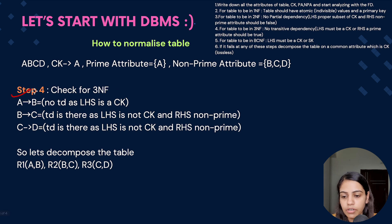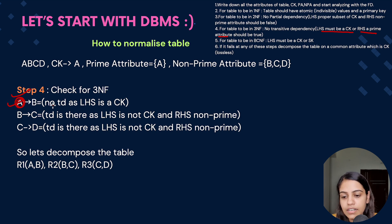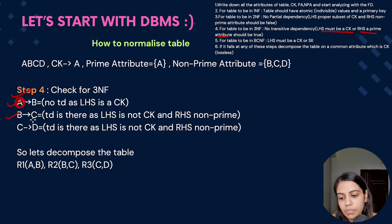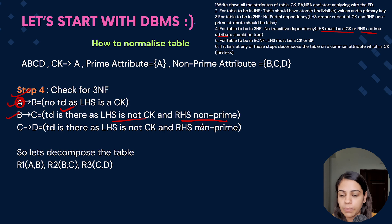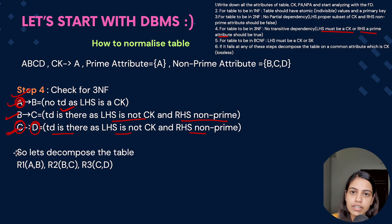Now check for third normal form — there shouldn't be any transitive dependency, meaning LHS must be a candidate key OR RHS must be a prime attribute. For A determines B: A is a candidate key, so no transitive dependency — condition is true. For B determines C: B is not a candidate key, and C is not a prime attribute — both conditions fail, so there IS a transitive dependency. For C determines D: C is not a candidate key, and D is not a prime attribute — transitive dependency present here as well. We have found two transitive dependencies, so we must decompose this table.